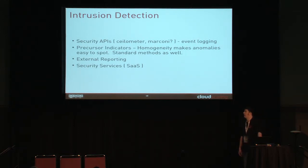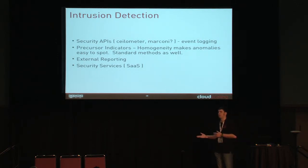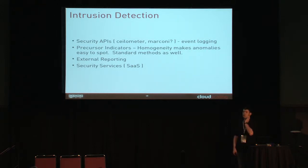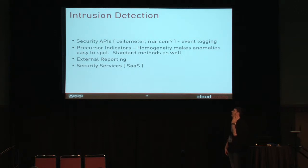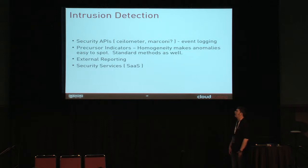The first part of this is detection — you want to know when something breaks. We know about the risks, we accept the risks, and when the risks occur, eventually we're going to have to pay the piper. We plan in advance; we have procedures, we prepare, we have resources available. These are some of the things we can do to increase intrusion detection capabilities throughout OpenStack: security APIs. We could leverage Ceilometer for that as an event logger. We could maybe use Marconi as an option for event logging. These are things we need to look into in these releases and make available.